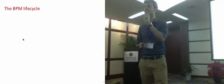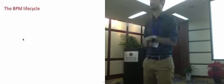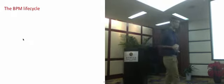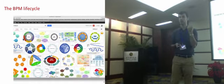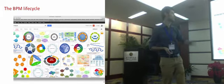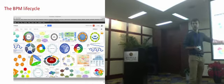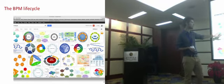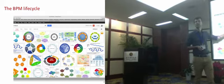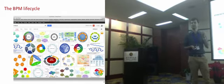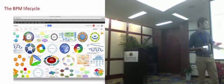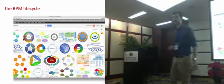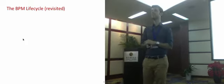Let's see where this transformation from conceptual to executable process model takes place in the context of the BPM life cycle. When we talk about a BPM life cycle, there is no one single approach describing it. If you Google 'BPM life cycle', you get a number of diagrams — some see BPM as a three-phase, four-phase, or five-phase process, and some go up to 12 or more steps. We can distill at least seven key phases in the BPM life cycle.